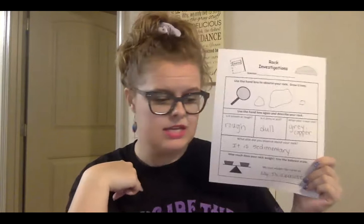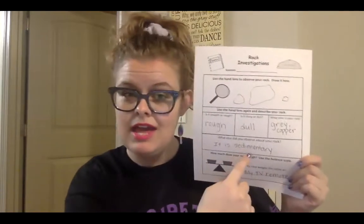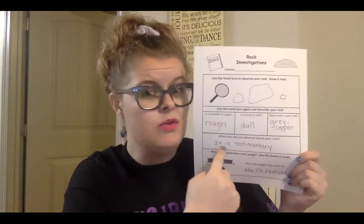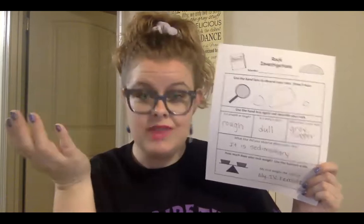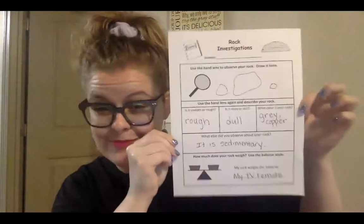It also asks: what else did you observe about your rock? I put that it might be a sedimentary rock because I saw different kinds of rocks inside it. If you found something different about your rock, maybe you could tell where you found it or what you think it was made out of. It also says: how much does your rock weigh? I didn't have a balance at my house, but I know another way to weigh something is just using my hands. I decided my rock feels about the same weight as my TV remote, so I wrote that down. See if you can find something that weighs about the same as your rock.